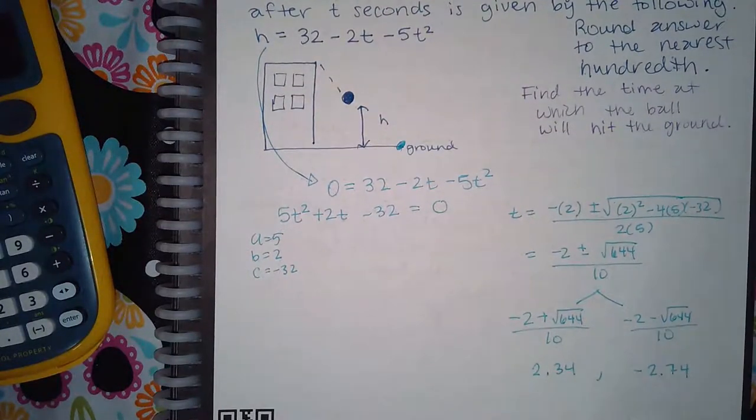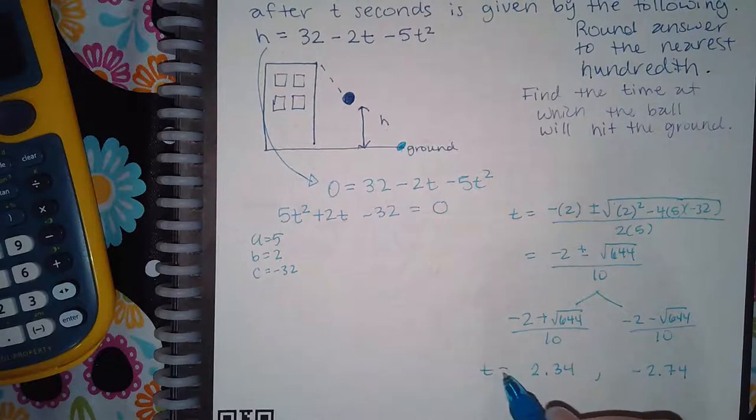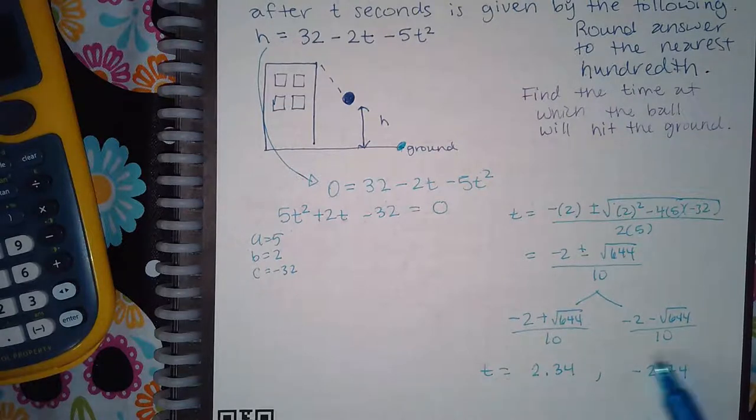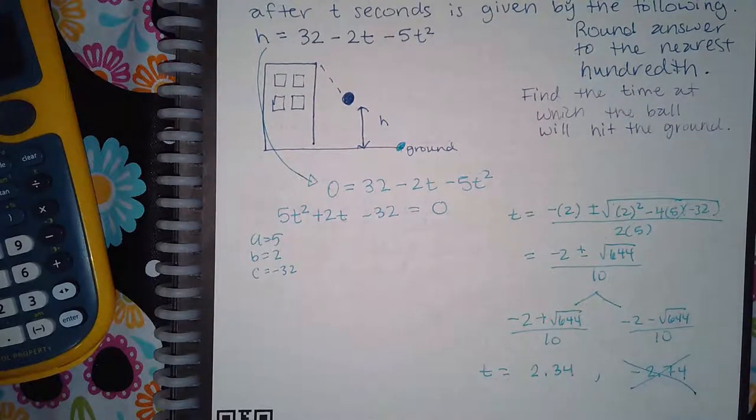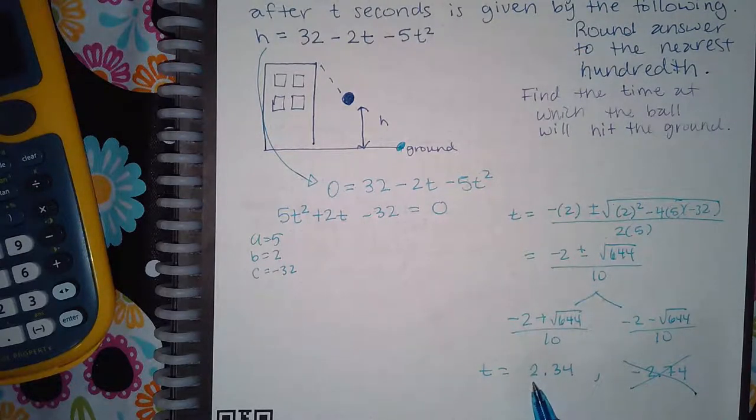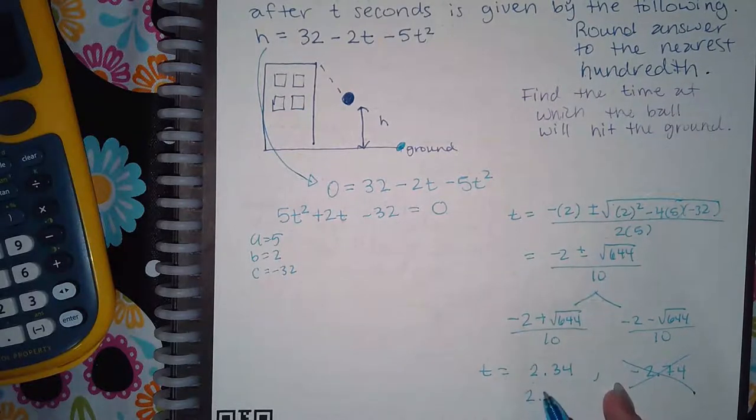But remember, these are t values. T equals this and this. It doesn't make sense for our time to be negative, so this response you omit because it doesn't fall for the description of the scenario. So the only actual answer that you'll get for this problem is 2.34 seconds.